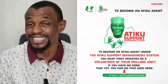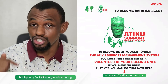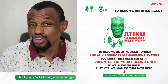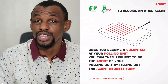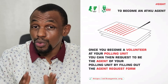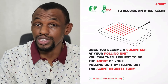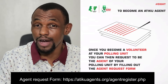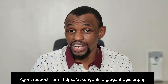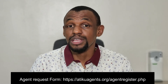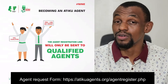If you have not done that yet, you can do so via the link shown here. Once you become a volunteer at your polling unit, you can then request to be the agent of your polling unit by filling out this agent request form. The agent registration link will only be sent to the selected agents.